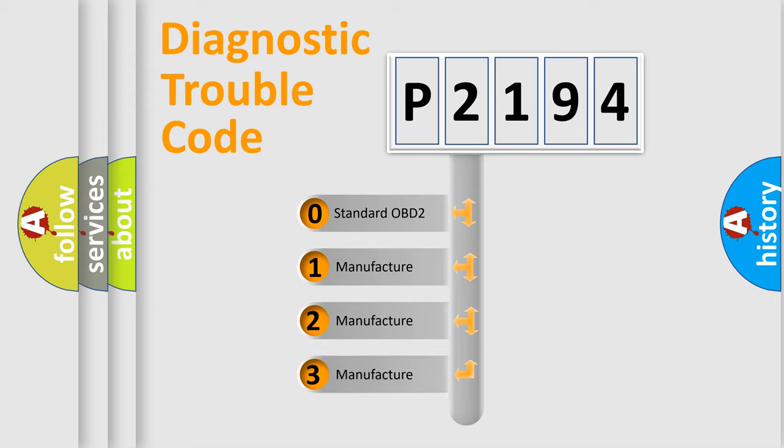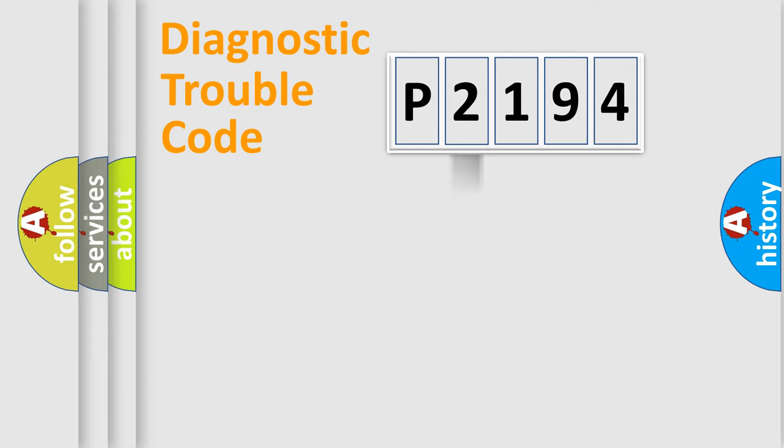If the second character is expressed as zero, it is a standardized error. In the case of numbers 1, 2, 3, it is a manufacturer-specific error code.